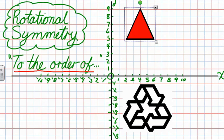Now technically there isn't any such thing as an order of 1. So basically, when a shape, as you turn it, does not look exactly the same as it does when it first starts, then you say that it has no rotational symmetry.